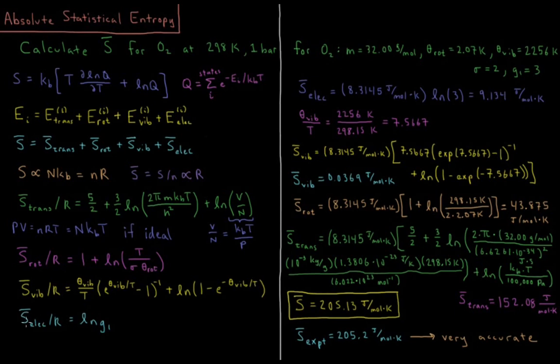And then lastly, we have the electronic molar entropy. S bar elec over the gas constant is equal to the natural log of the degeneracy of the ground state. So for most molecules, this is a singlet, and it ends up being 0, and ln of 1 is 0. But for O2, it ends up being 3, a triplet, so we do get electronic entropy. For most standard organic molecules, we don't get any electronic entropy.